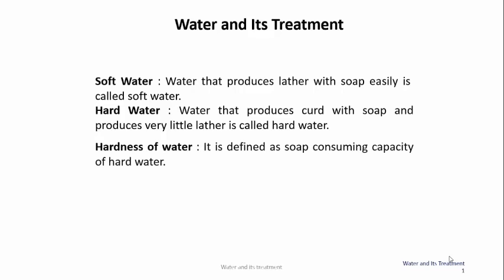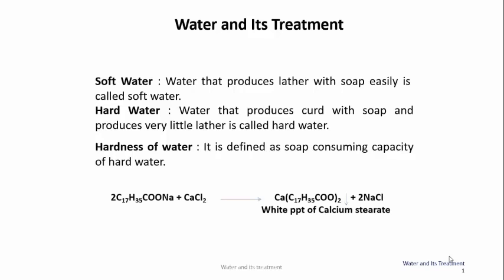Hardness of water is defined as soap consuming capacity. Soap is nothing but salts of stearic acid, palmitic acid, oleic acid, etc. Sodium stearate, which is a soap, when it reacts with hard water — which basically contains calcium or magnesium ions — instead of forming lather, it gives a white precipitate called calcium stearate. So it is consuming the soap. Hence, hardness of water is nothing but soap consuming capacity.